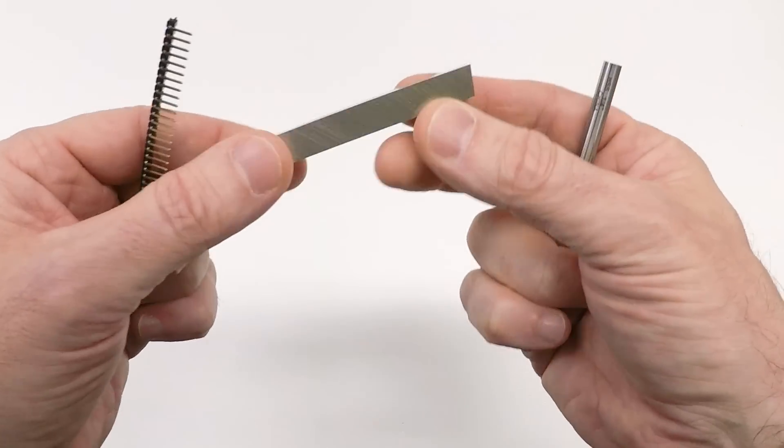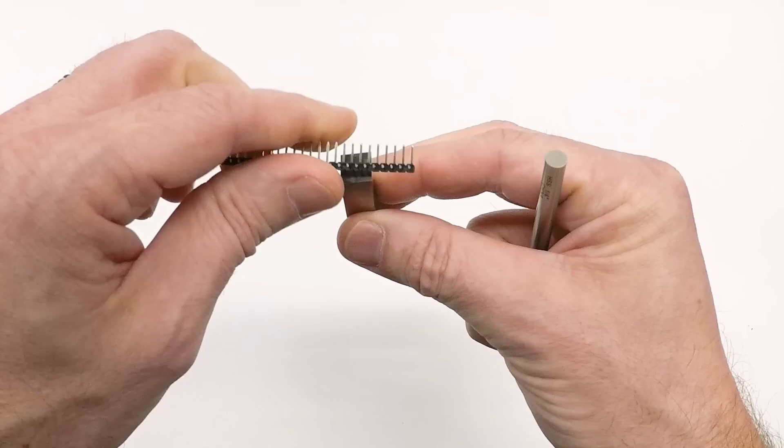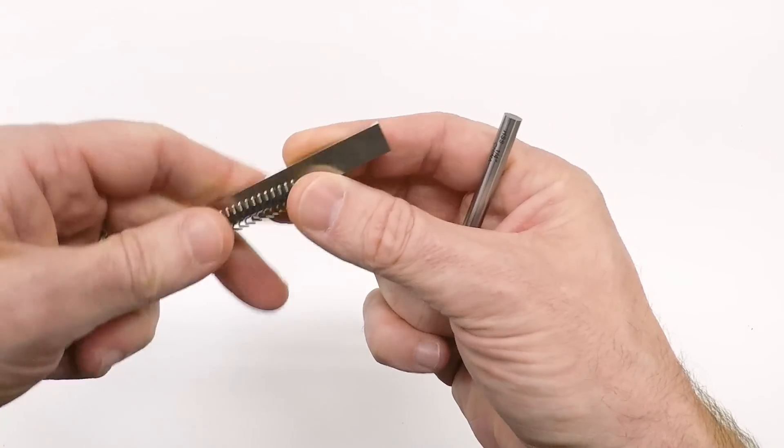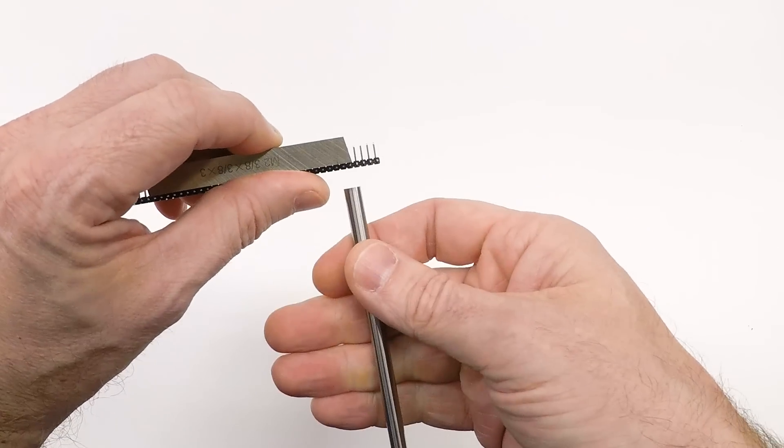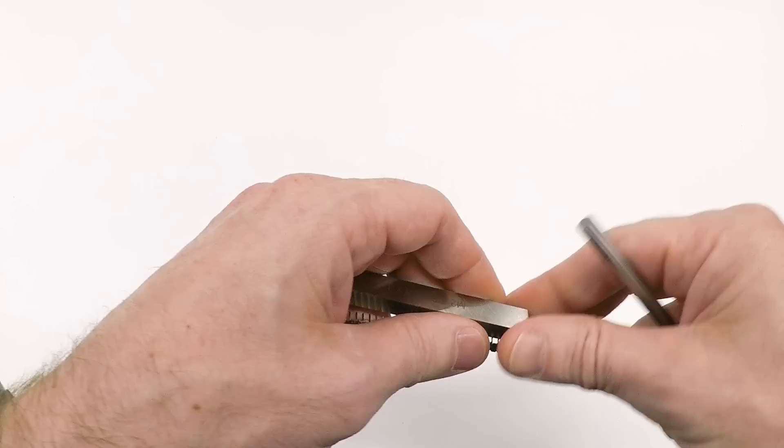I even tried bringing in like a lathe tool bit. This has a nice sharp edge. I tried orienting it vertically and getting a shearing action. I tried laying it down, sliding this along the top of it, and then trying to use a punch to shear it off. I could not get it to work.